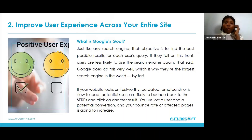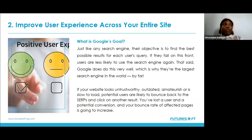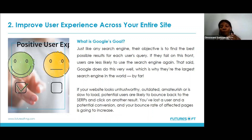The next method is improving user experience across your site. Just like any search engine, Google's objective is to find the best possible result for each user query. Google needs to make sure every result it presents actually provides value and answers users' search queries. If your web page doesn't have a perfect layout that passes Google's user experience standards, it will be hard to rank.